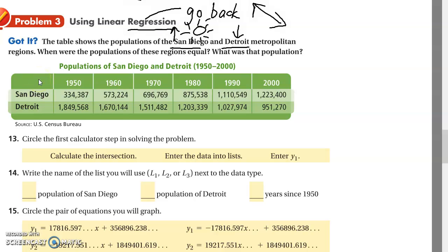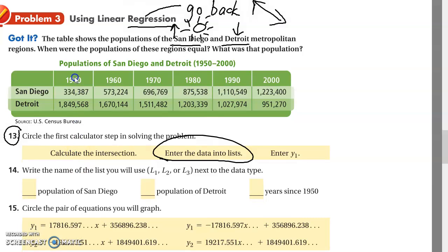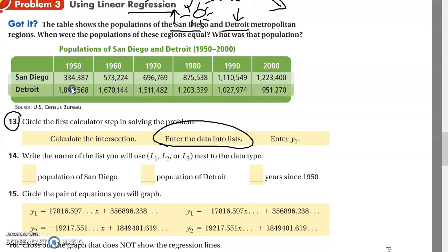So let's look at these and see what they have to say. Circle the first calculator step in solving the problem. So what are you going to do first to solve this problem, number 13? You're going to enter the data into the list. And we don't have these type of calculators, so I'm going to do all the work for you here. And there are certain scientific calculators you can use to solve this, but we're not going to do this. And so I'm just going to show you what the answers are and move forward.